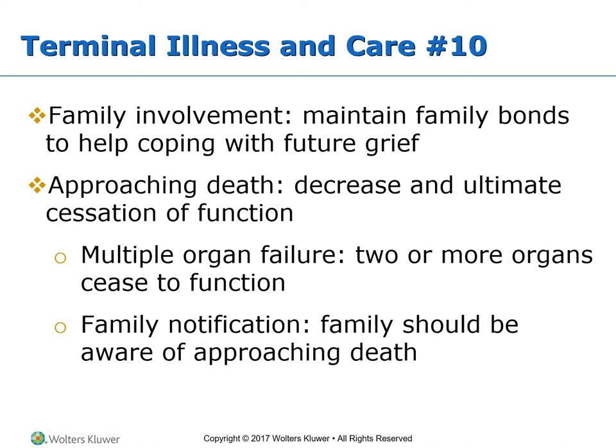Signs of multiple organ failure: Heart — hypotension, irregular weak and rapid pulse, cold, clammy, and mottled skin. Liver — internal bleeding, edema, jaundice, and impaired digestion, distension, anorexia, nausea, and vomiting. Lungs — dyspnea and accumulation of fluid called the death rattle. Kidneys — oliguria and anuria; pruritus (itching skin). Brain — fever, confusion, and disorientation; hypoesthesia (reduced sensation); hyporeflexia (reduced reflexes); stupor and coma.